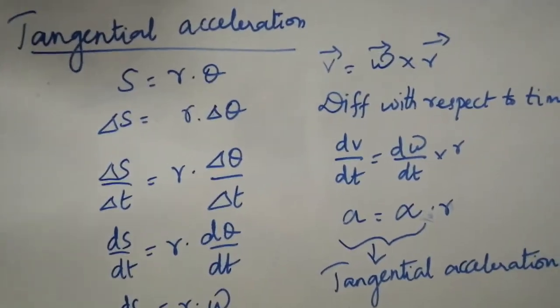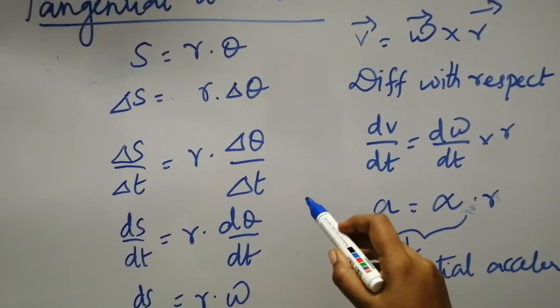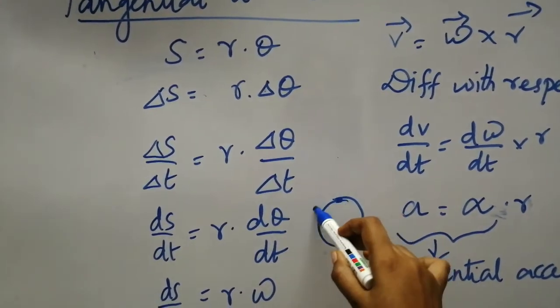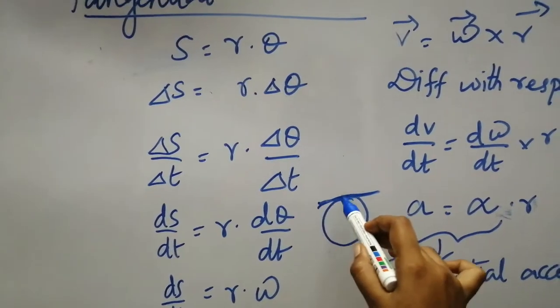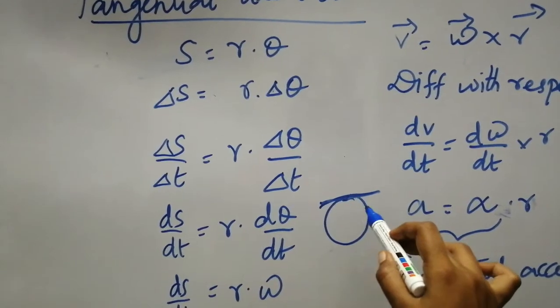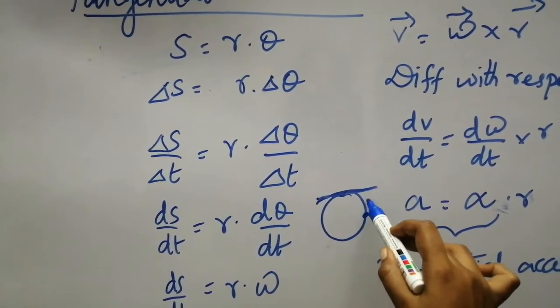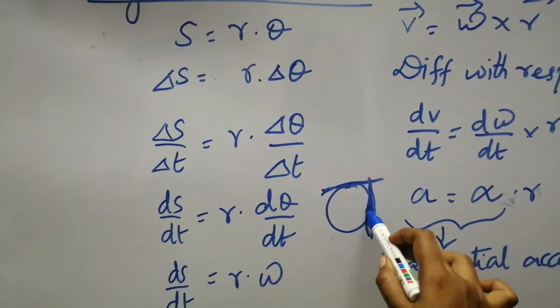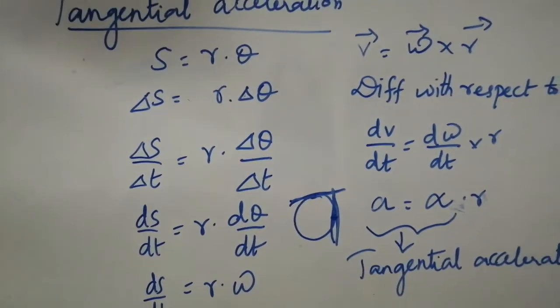So what is a tangent? See, it is a straight line drawn for a circle, touching a circle at one single point, is called tangent. At any point it may be, but the line is a straight line. It should touch the circle at one single point. This is called tangent.